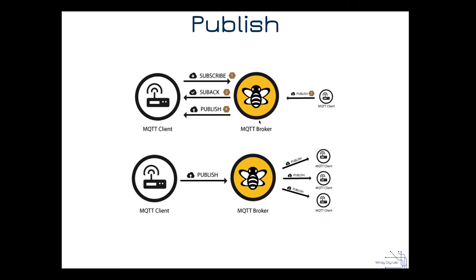Here's the process numbered out. An MQTT client subscribes and gets a subscription acknowledgement back, so the client knows it's successfully subscribed. Then over here, an MQTT client publishes something to the topic they've subscribed to, and that published piece of information goes to the MQTT client. This also shows a one-to-many scenario: a client publishes something, and because all of these clients subscribed, that item goes out to all three of them.